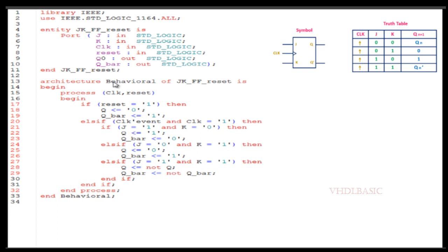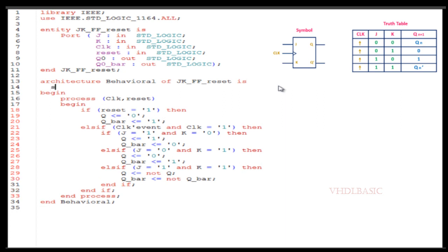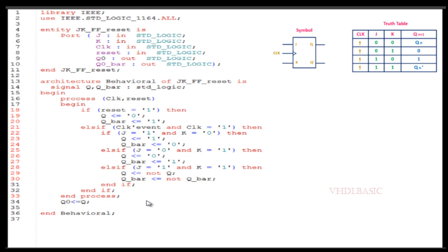To solve this syntax error, I am going to change the output port names. I will rename Q to Q0 and Q-bar to Q0_bar. I will also declare Q and Q-bar as signals so that I don't need to change anything inside the process. Then in line 34 I assign Q to Q0, and in line 35 I assign Q-bar to Q0_bar.